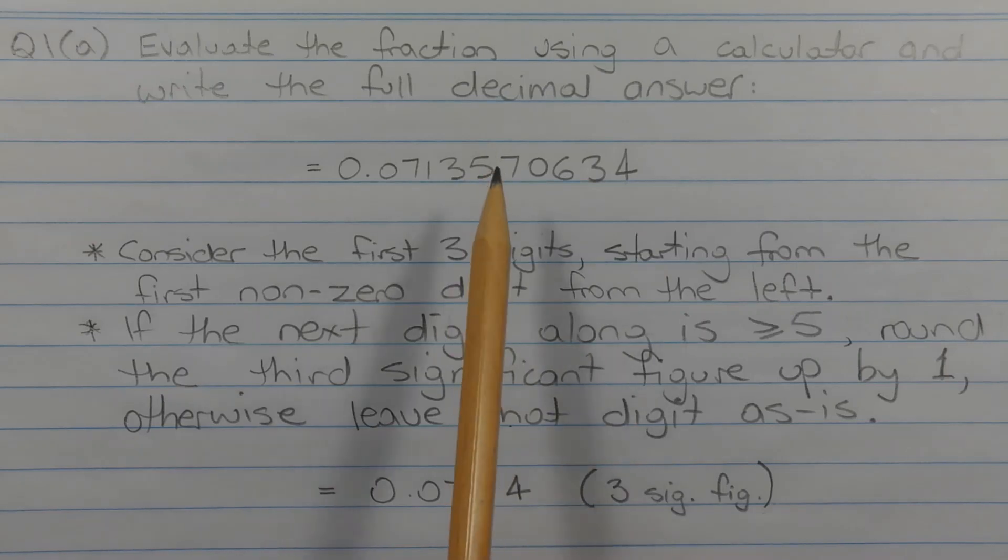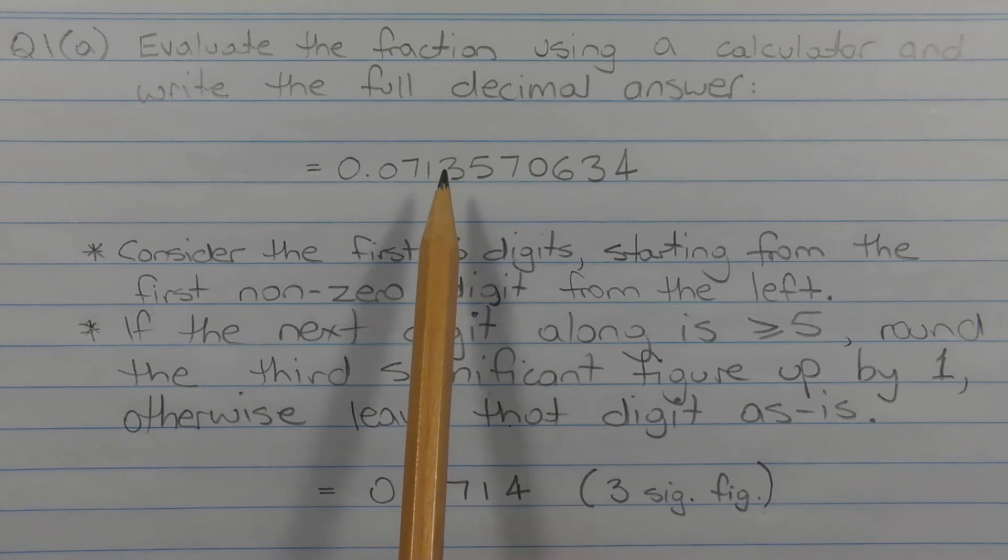And as it happens, this digit here is greater than or equal to 5. So the third significant figure, which is the 3, needs to be rounded up by 1.